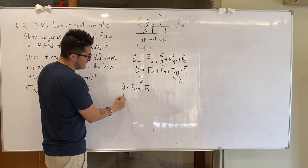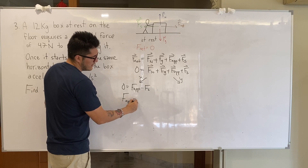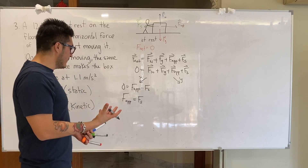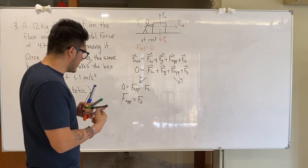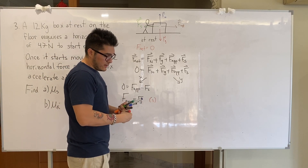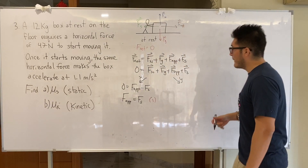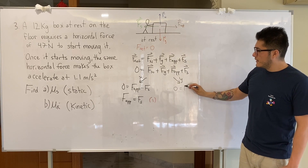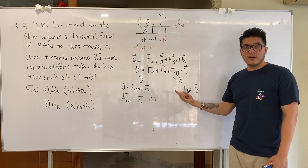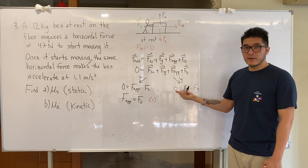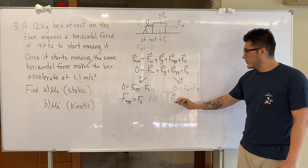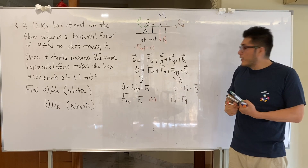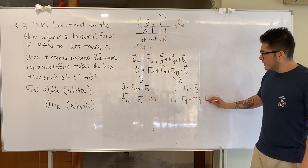From the x-component equation, we get: applied force equals static frictional force. From the y-component, we get: normal force equals the force of gravity, which is mg. These are our two key equations. Now we want to find the coefficient of static friction using the formula: fs equals mu_s times fn.